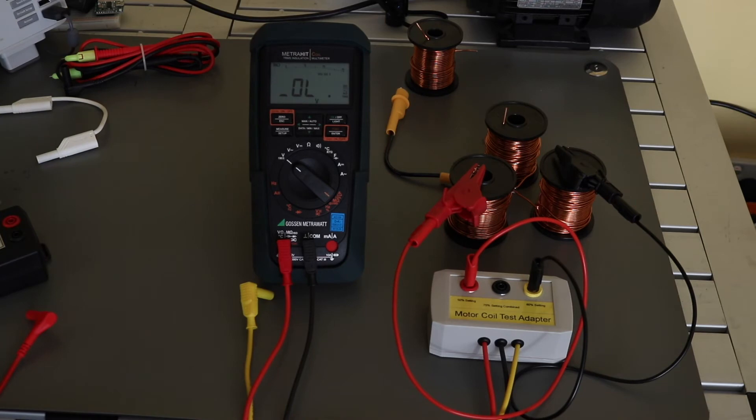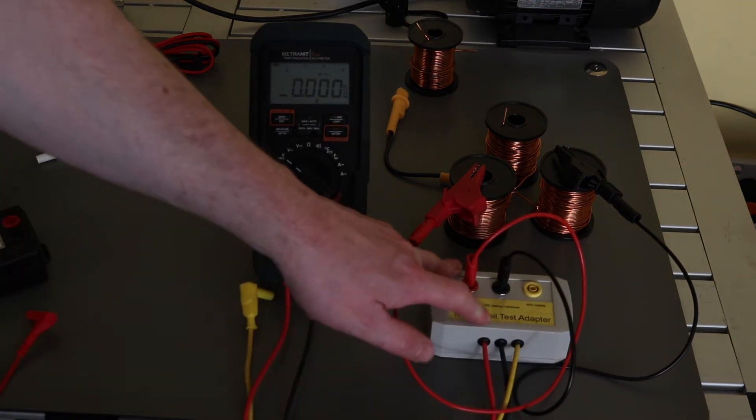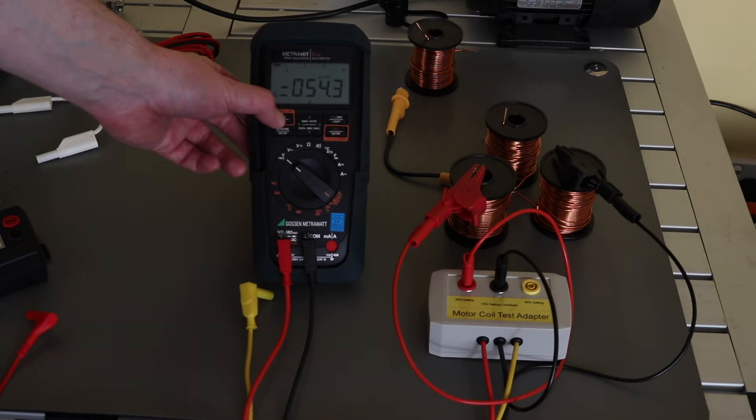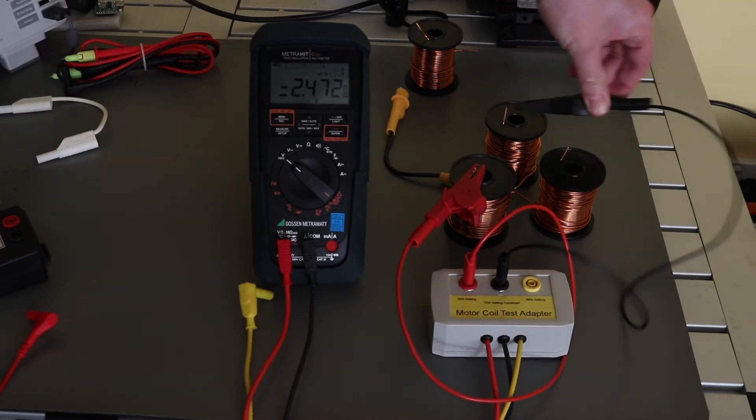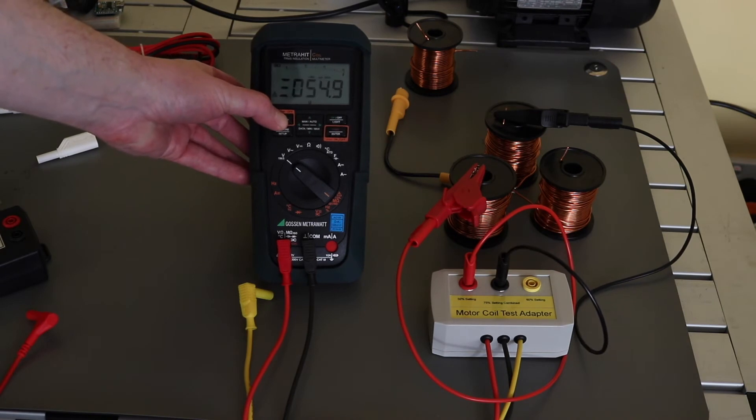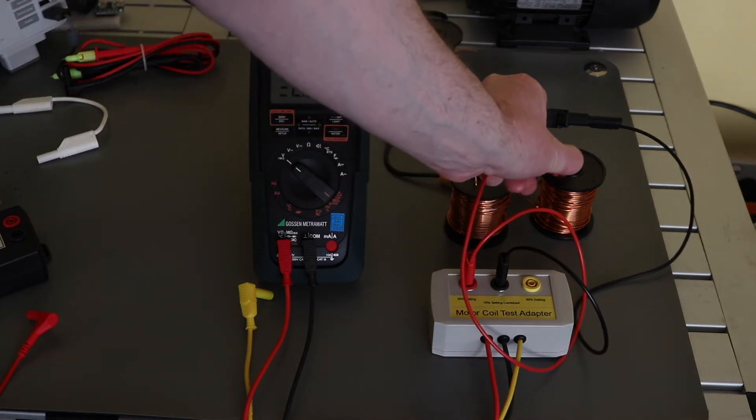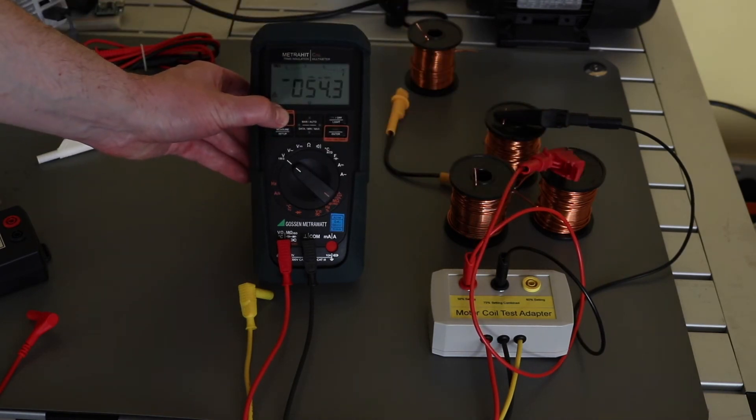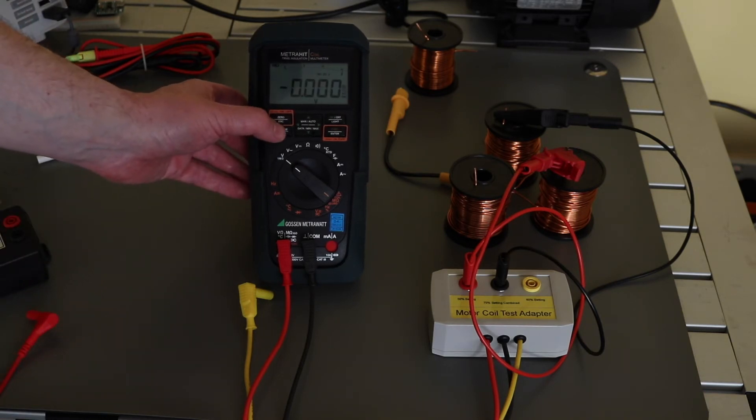So this should be somewhere around about 52-53 on the reading. There we go. Should be around about 52 which would be halfway, but we're on 54. We will just do all three. Similar sort of reading. And the final phase. And again, similar sort of setup.